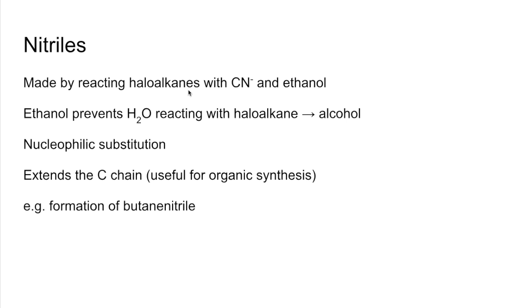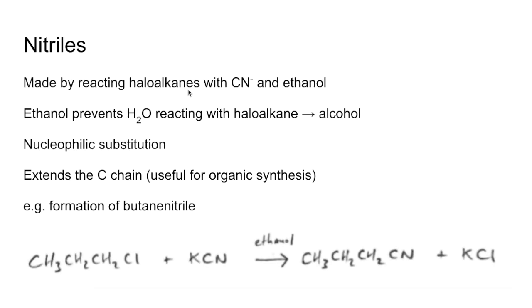So the haloalkane only needs three carbons. We react chloropropane with a source of CN⁻ ions — using KCN — remembering to use ethanol as the solvent. The products are butanenitrile and KCl.